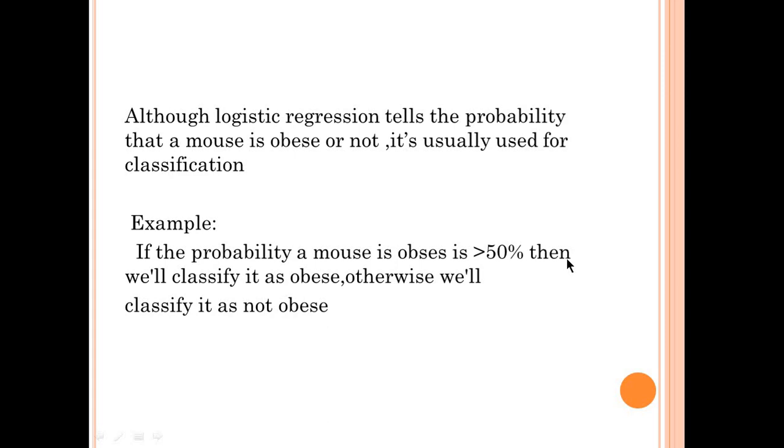Although logistic regression tells the probability that a mouse is obese or not, it is usually used for classification. For example, if the probability a mouse is obese is greater than 50%, then we can classify it as obese, otherwise we can classify it as not obese.